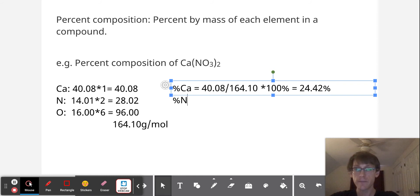The percent nitrogen is equal to, we have 28.02 divided by, again, 164.10. We'll multiply by 100% and we get 17.07%.